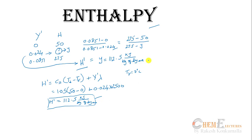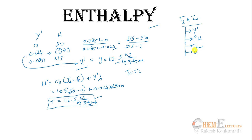In summary, from the two known quantities — dry bulb and wet bulb temperature — we found absolute humidity, percentage humidity, dew point temperature, specific volume, and enthalpy using the chart. Additional terms like relative humidity, molar humidity, and humid heat were found using known equations. This is how the psychrometric chart is useful.